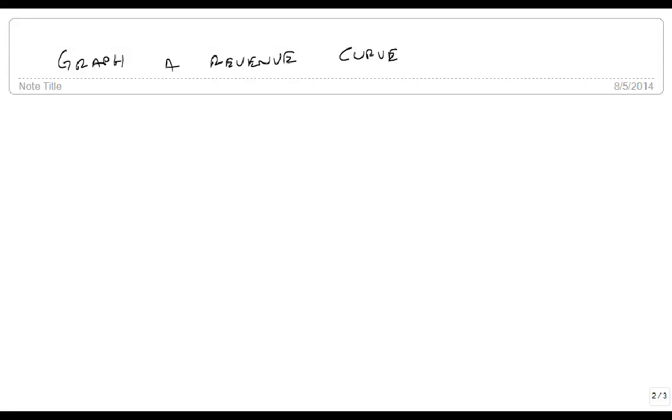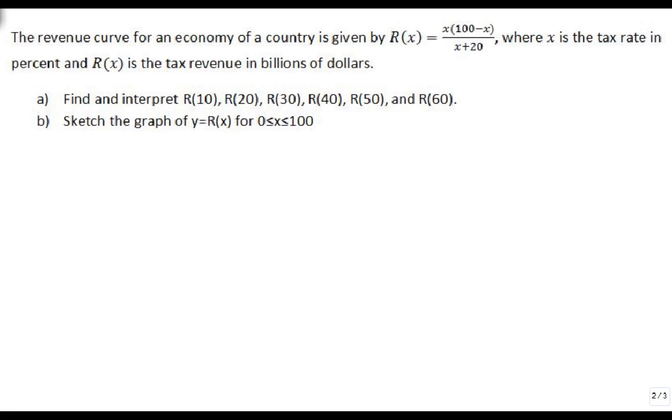Let's solve an applied problem using a rational function. We're going to look at the revenue curve for the economy of a country, where the revenue curve is given by R(x) equals x times 100 minus x all over x plus 20, where x is the tax rate in percent and R(x) is the tax revenue in billions of dollars.